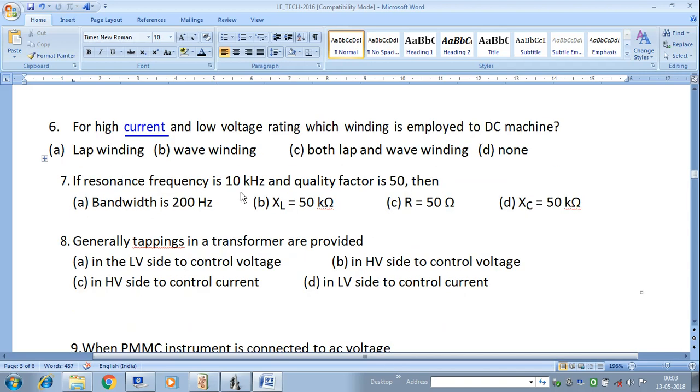If resonant frequency is 10 kHz and quality factor is 50, then answer A, bandwidth is equal to 200 Hz, is correct.